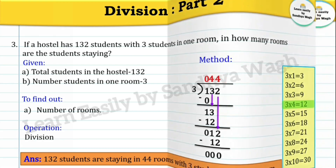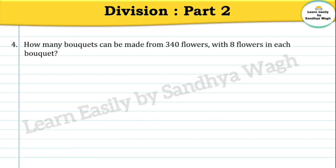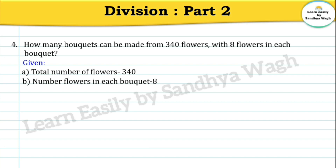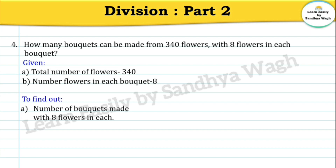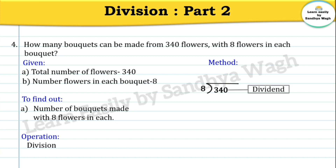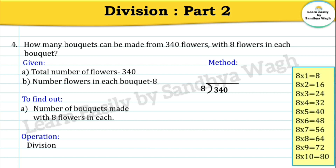Question 4: How many bouquets can be made from 340 flowers with 8 flowers in each bouquet? Given: total number of flowers is 340; number of flowers in each bouquet is 8. What do we have to find out? Number of bouquets made with 8 flowers in each. Operation: division. So let us divide 340 by 8.